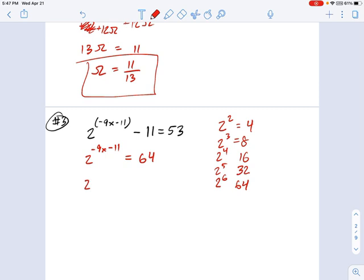So we just rewrite this as 2 to the power of negative 9x minus 11 equals 2 to the 6th power. So you see, with just a little bit of work, we've accomplished step one of this procedure. We've gotten an equal base on each side. All right, so now we just drop the base and we get negative 9x minus 11 equals 6.